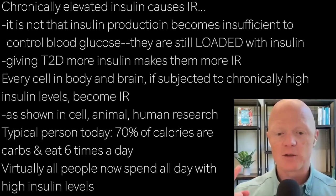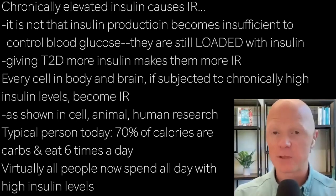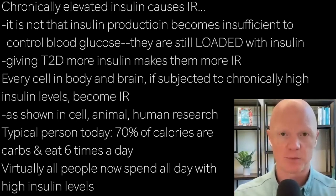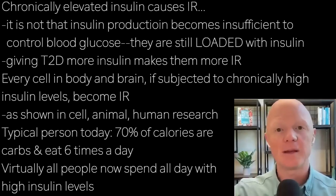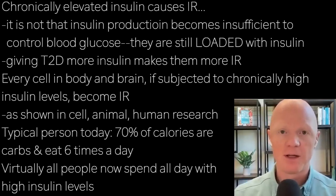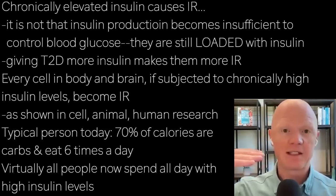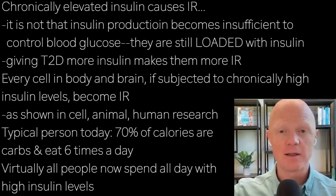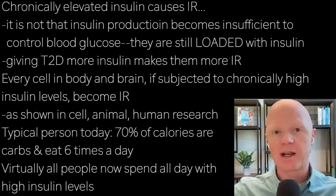Chronically elevated insulin causes insulin resistance — I've published reports on this, and many other basic scientists and clinicians have observed this as well. With type two diabetes, it's important to note that insulin never drops to zero. That does not happen. It has been really, really high. Sometimes it comes down a little, but it is still multiples higher than it ever was before they started on that disease progression.